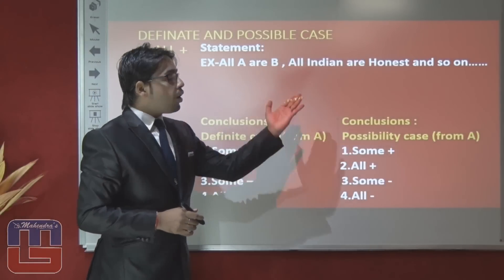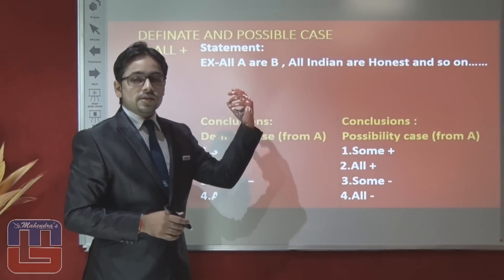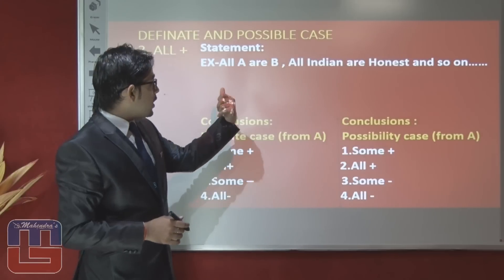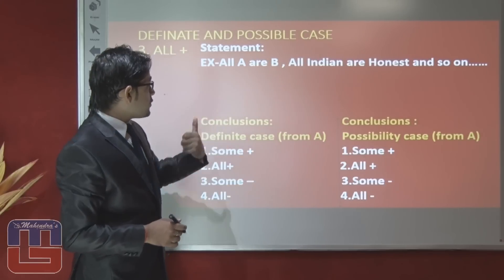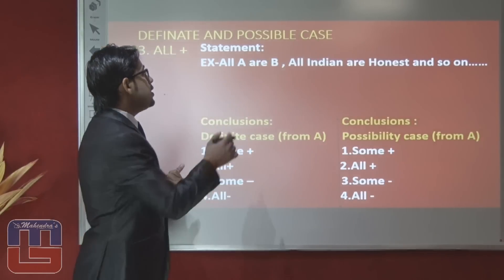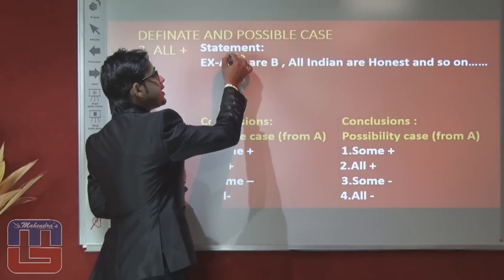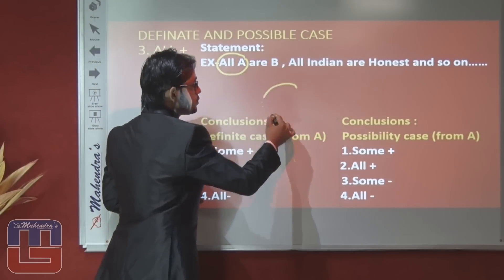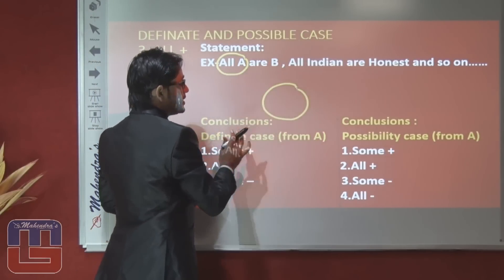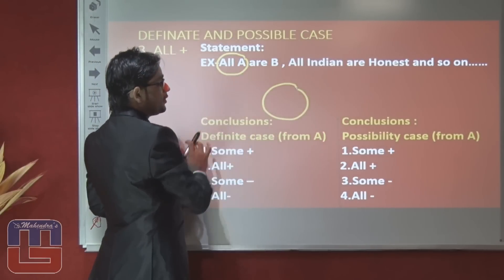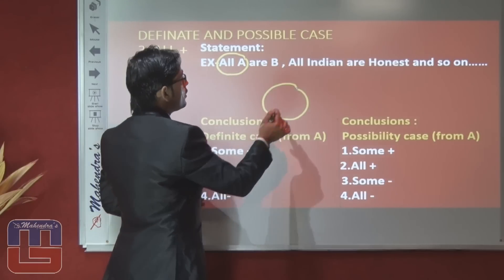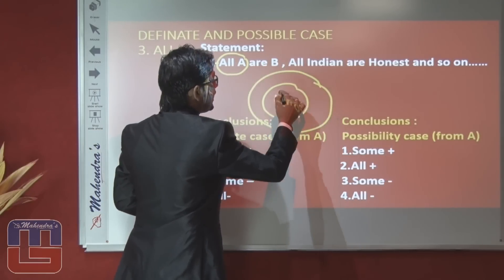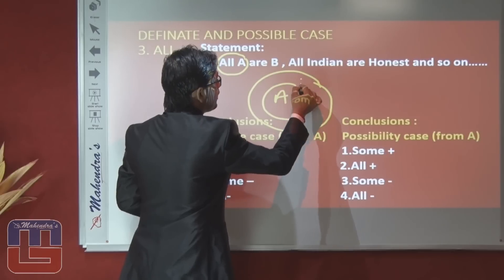Now for 'all A are B': whenever you find this type of statement, the first variable is within the circle of the second — a smaller circle inside a larger one. For 'all A are B,' the relation between these two variables is different from both sides, so be focused while answering whether the examiner wants to know on behalf of A or on behalf of B.